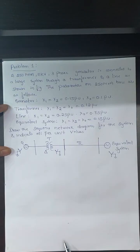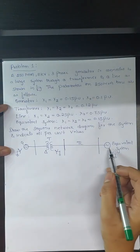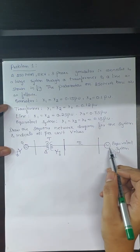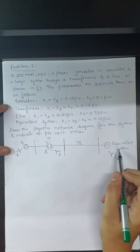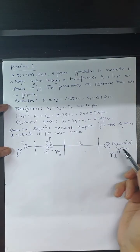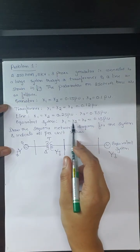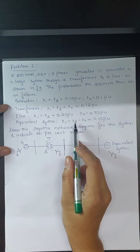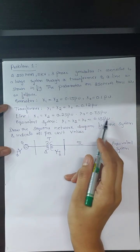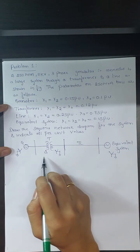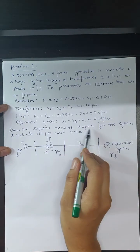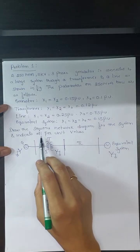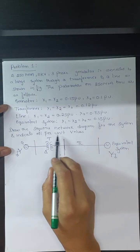The equivalent system — which may represent a generator or motor, any equivalent synchronous machine — has all three reactances (positive, negative, and zero sequence) equal to 0.15 per unit. We now need to draw the sequence network diagram for the system and indicate all the per-unit values for the given single line diagram.